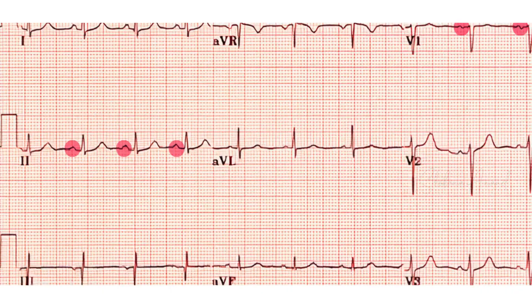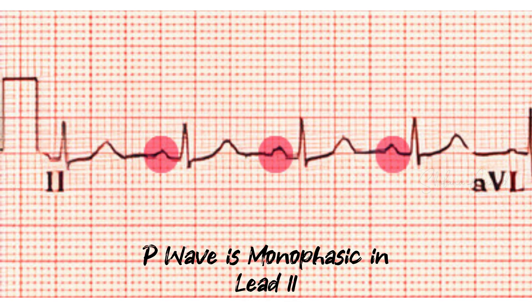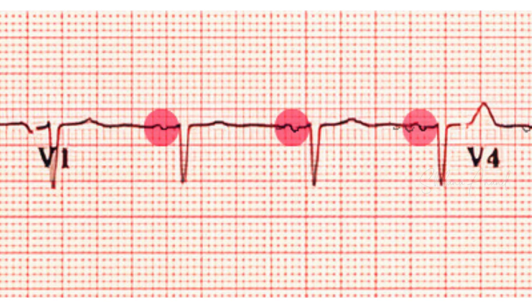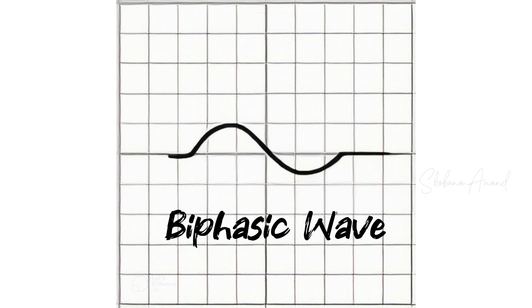The P-wave is normally biphasic in V1 and monophasic in lead II. Biphasic means it has an upper deflection and a downward deflection — that is our biphasic waveform.